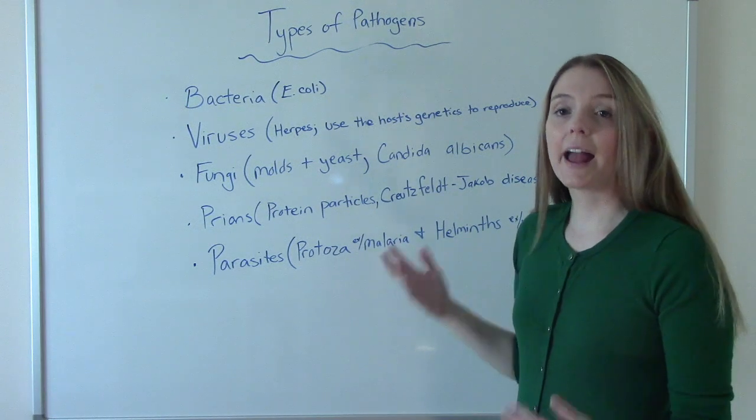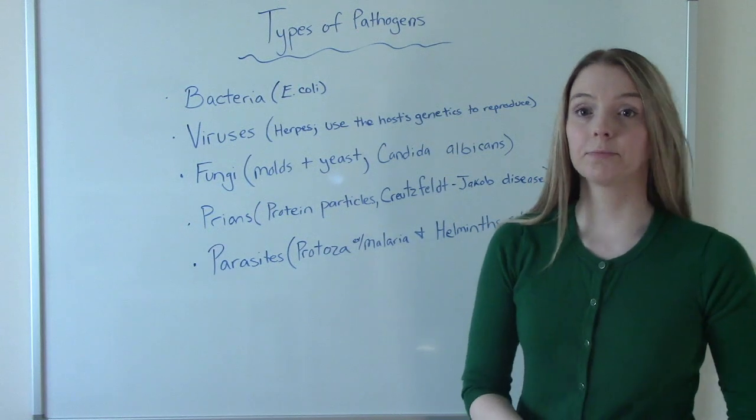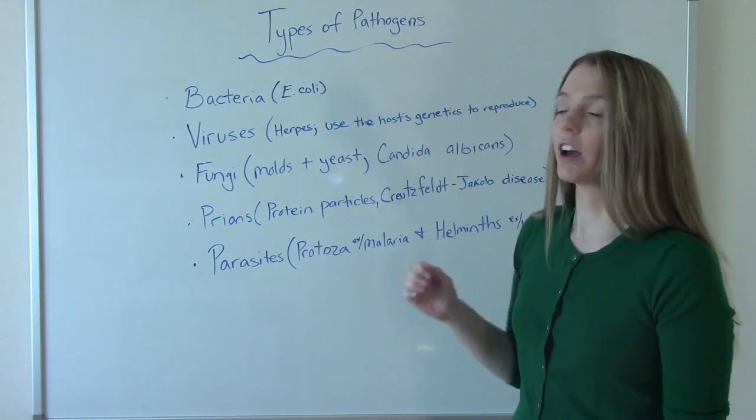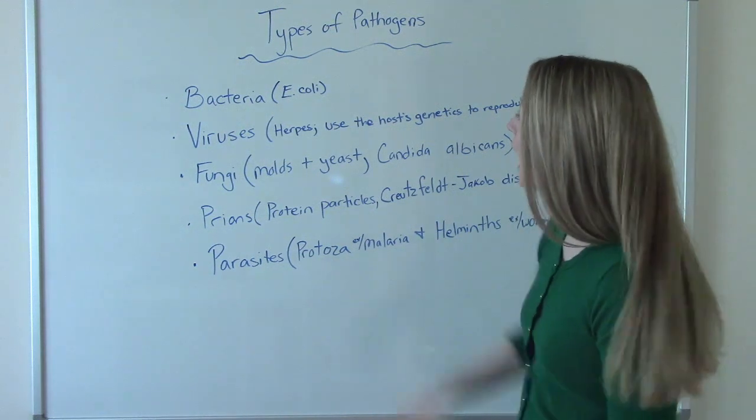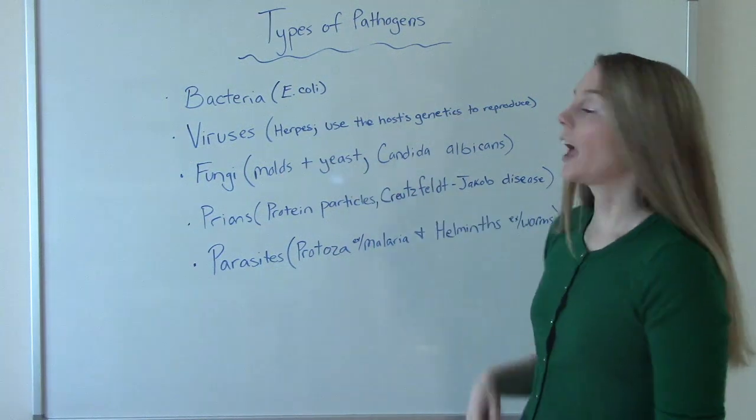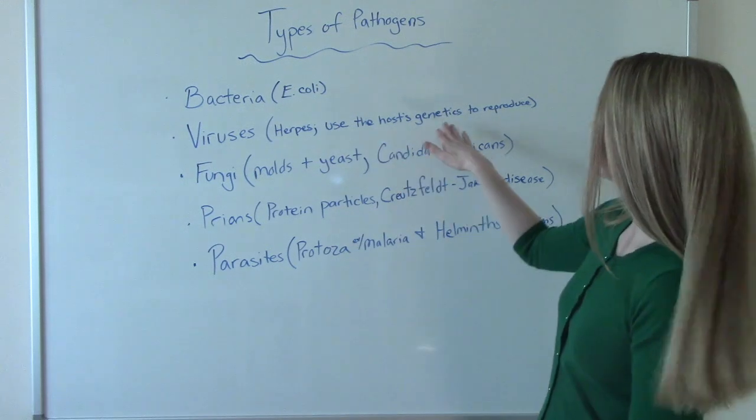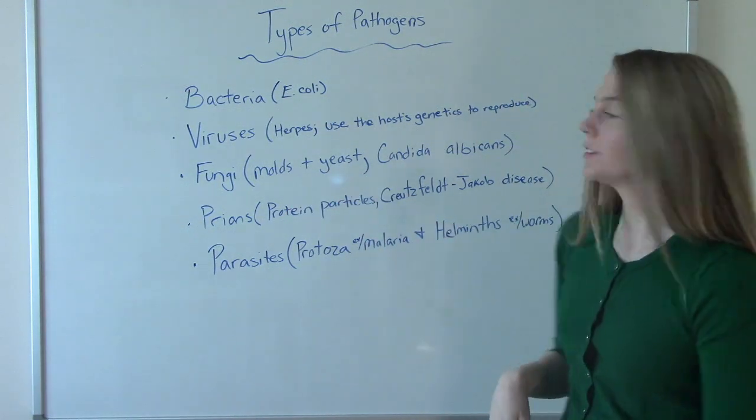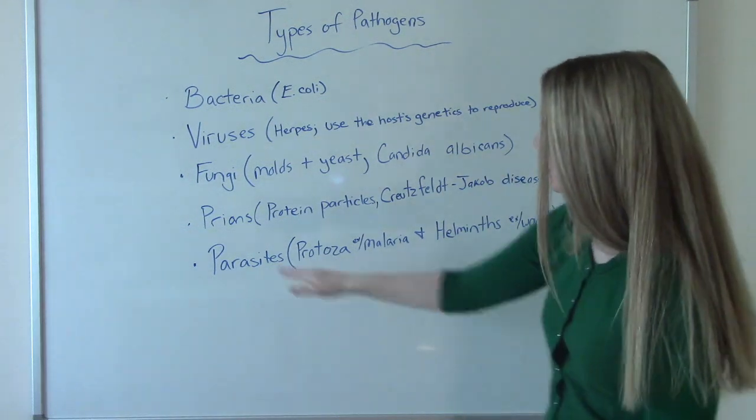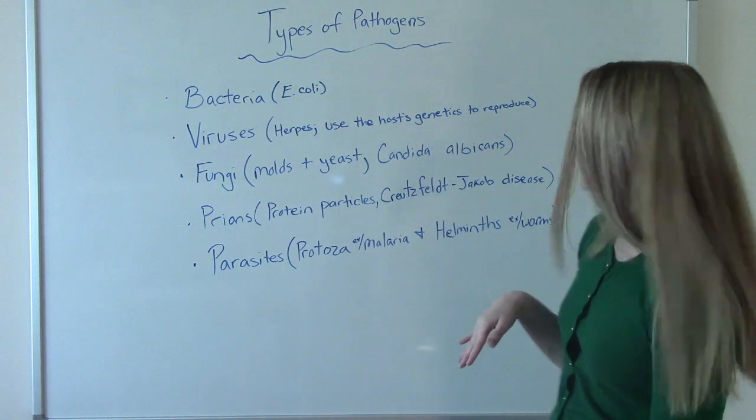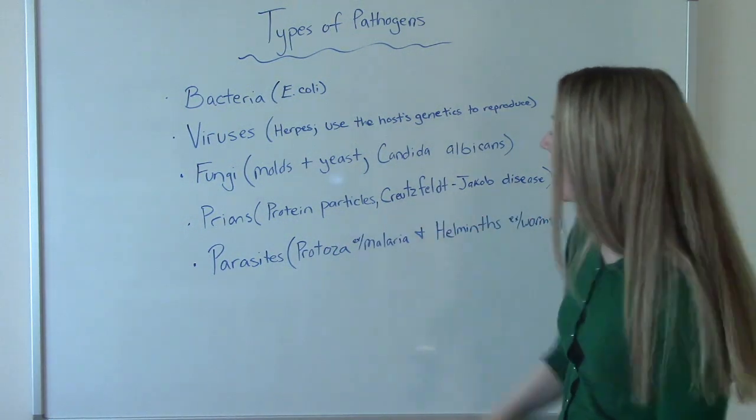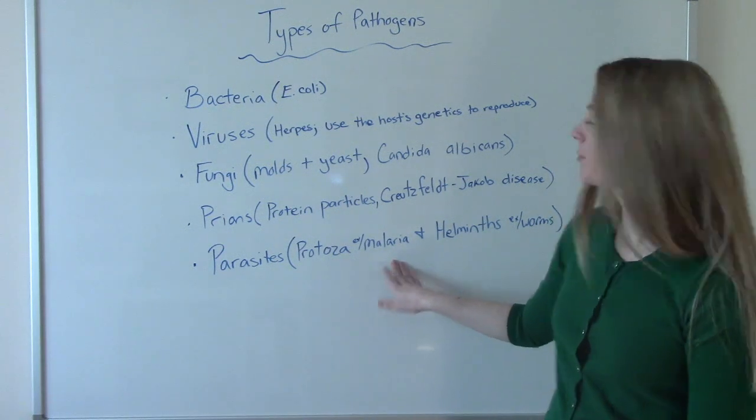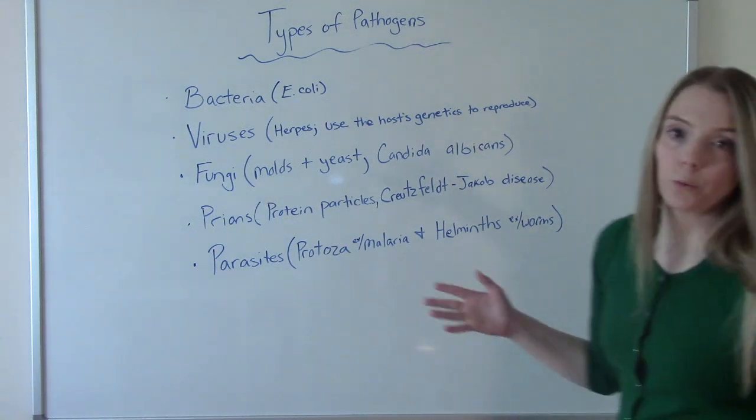Let's talk about the different types of pathogens. Pathogens are anything that can invade your body and make you sick. Bacteria is a common one we think of. E. coli is an example of a common bacterial infection like a UTI. Viruses, an example could be herpes. What's special about viruses is they use the host genetics to reproduce. Fungi are molds and yeasts, like Candida albicans. Prions are protein particles, an example is Creutzfeldt-Jakob disease. And parasites include protozoas like malaria and helminths like roundworms.